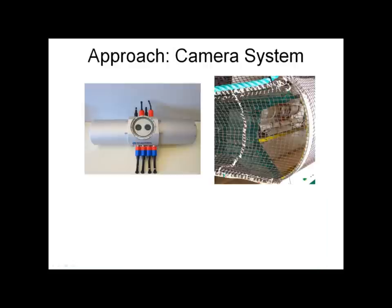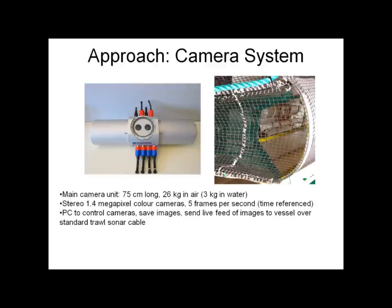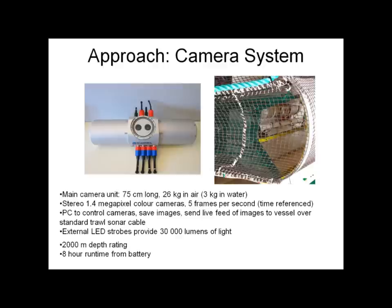A little bit about the technical aspects. The main camera unit is less than a meter long; it weighs 26 kilograms in air and about three kilos in water. The image on the right shows how it's placed in the larger deployment frame in the trawl. We have stereo color cameras at 1.4 megapixels, collecting images at five frames per second, everything time-referenced. Inside the main unit is a PC to control the cameras and save the images, and we also have capacity for a live feed to the vessel. Light is provided by external LED strobes giving 30,000 lumens — equivalent to about 35 incandescent 65-watt bulbs — which I know can be a concern related to fish behavior. It has a 2,000-meter depth rating, and we're running it off battery for eight hours of runtime.